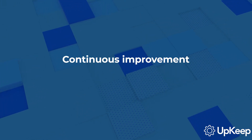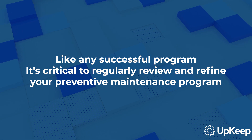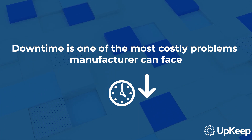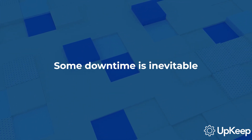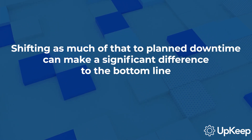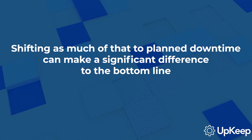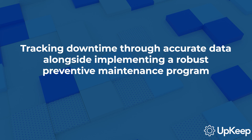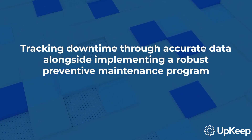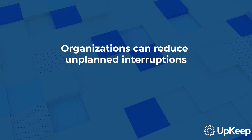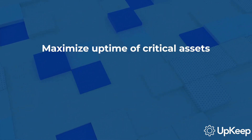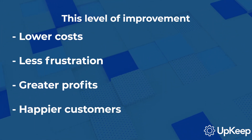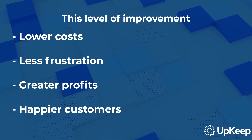And lastly, continuous improvement. Like any successful program, it's critical to regularly review and refine your preventive maintenance program. In conclusion, downtime is perhaps one of the most costly problems that a manufacturer can face. Although some downtime is inevitable, shifting as much of that to planned downtime versus unplanned events can make a significant difference to the bottom line. By tracking downtime through accurate and complete data collection alongside implementing a robust preventive maintenance program, organizations can reduce unplanned interruptions, improve equipment reliability, and ultimately maximize uptime of critical assets. That level of improved operational efficiency means lower costs, less frustration, greater profits, and happier customers.